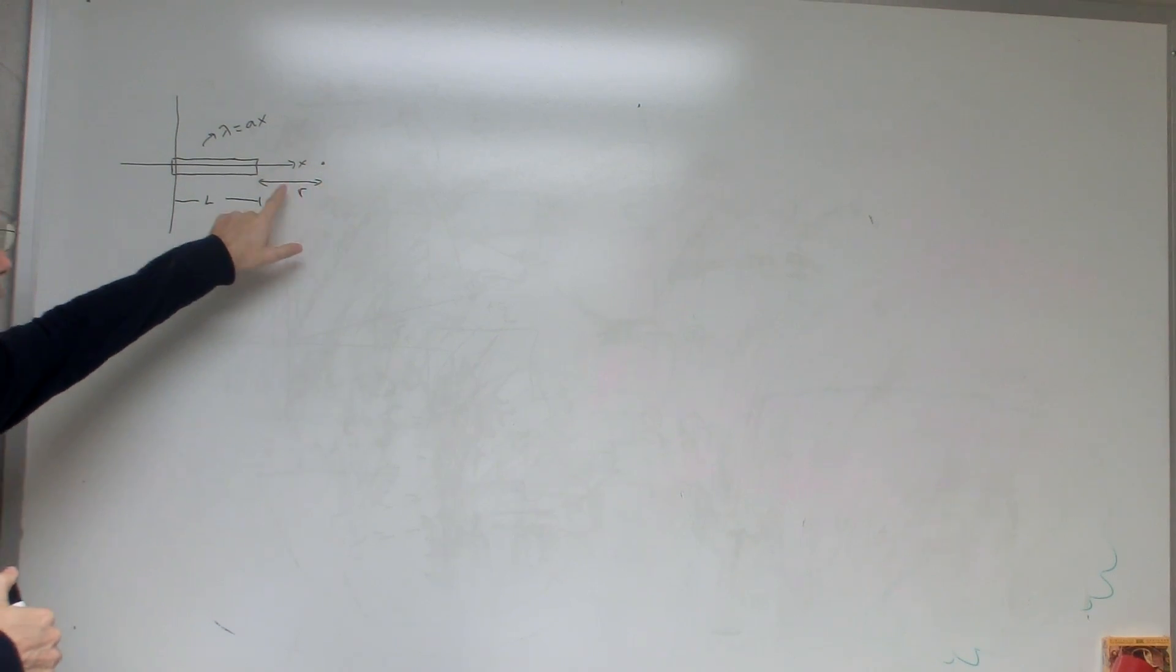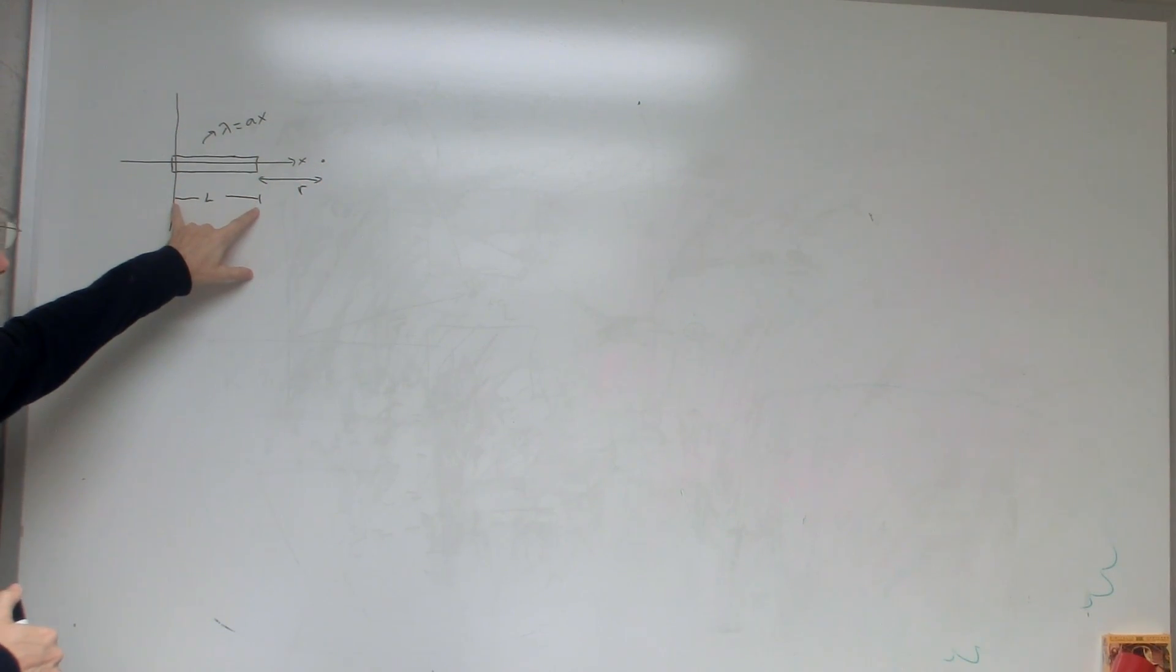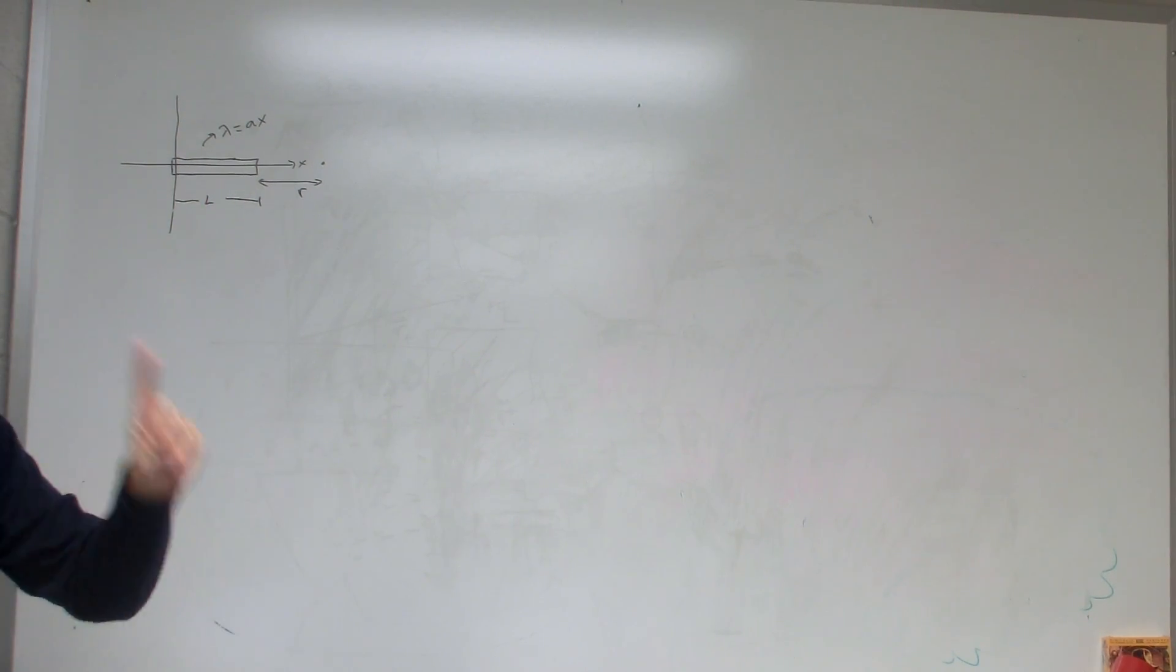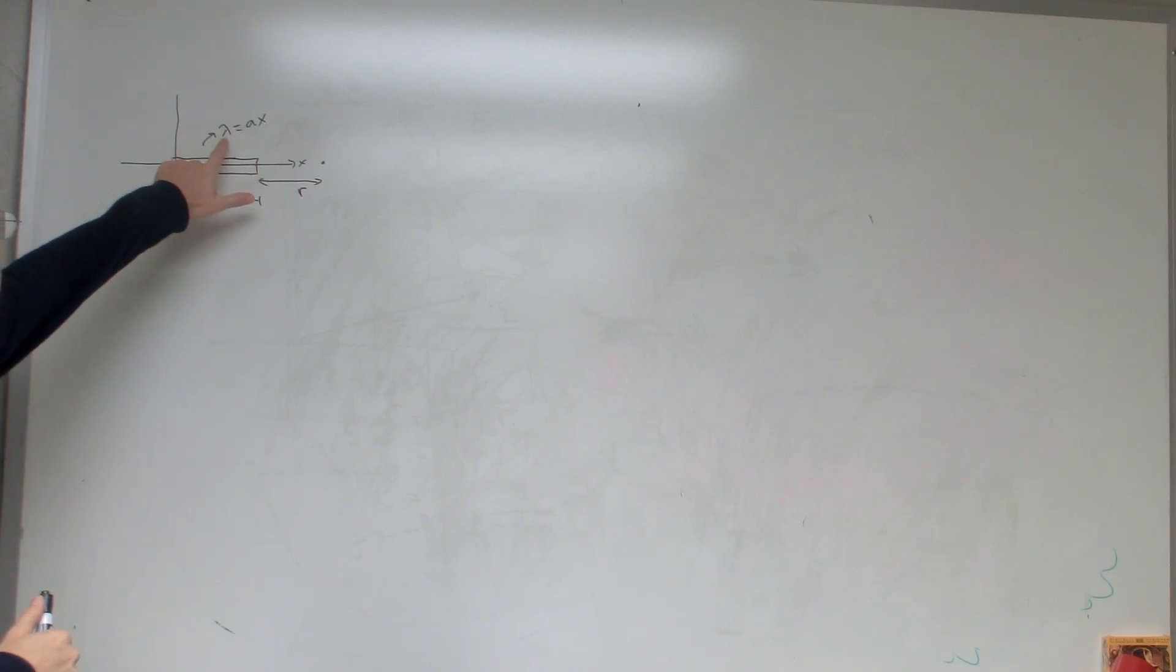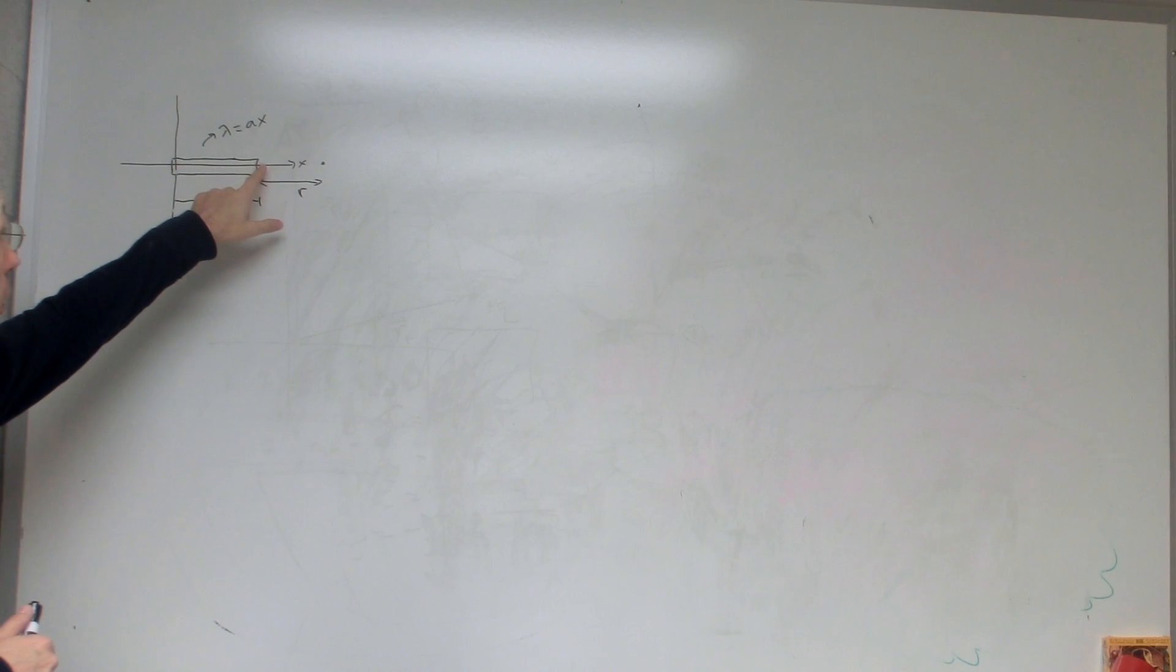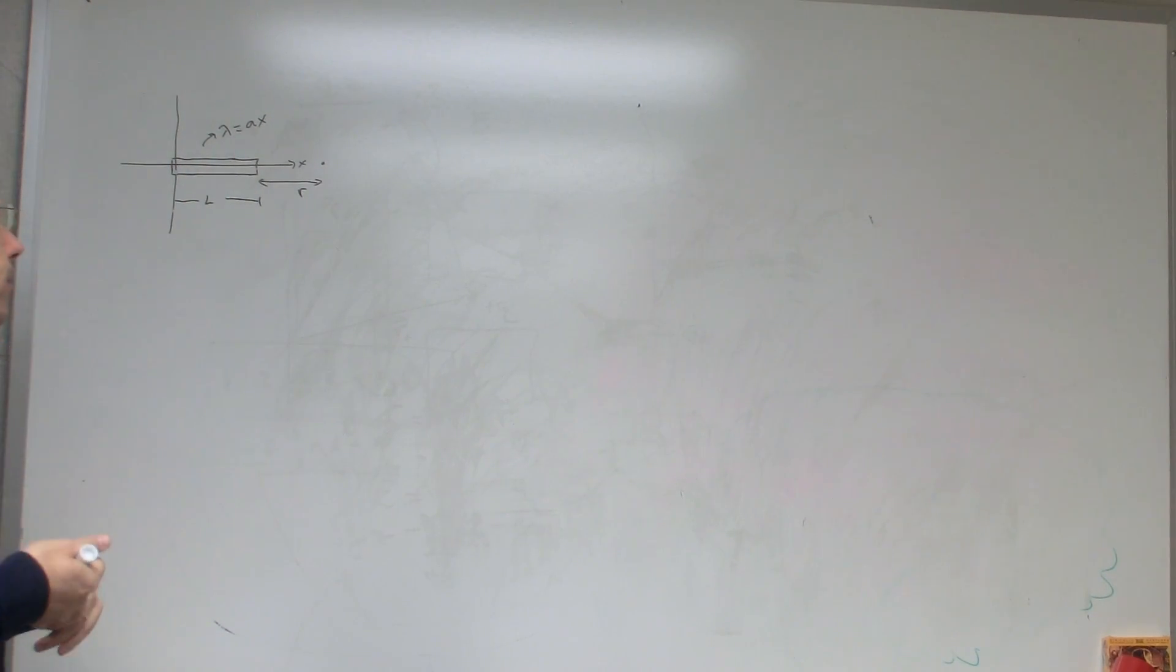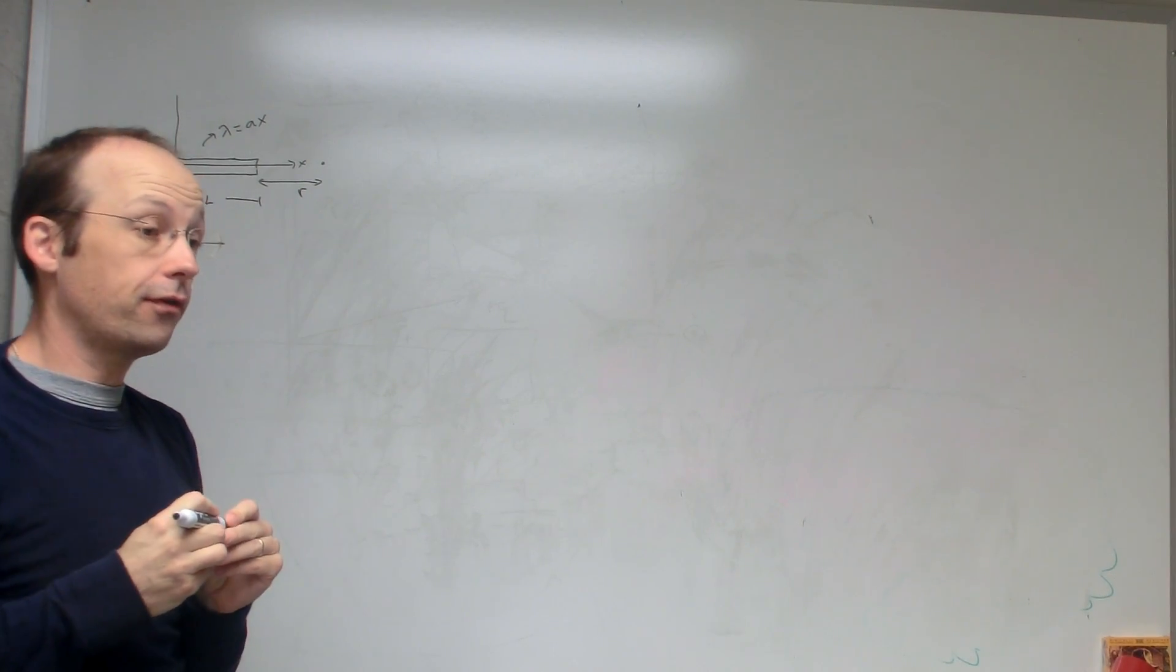This is a line that's a length of L, but it's not any special line. It doesn't have a uniform charge distribution. Instead it has a charge distribution, a charge density lambda, a charge per unit length of a times x. So over here there's no charge and over here there's a lot. So as you move this way there's more and more and more charge.